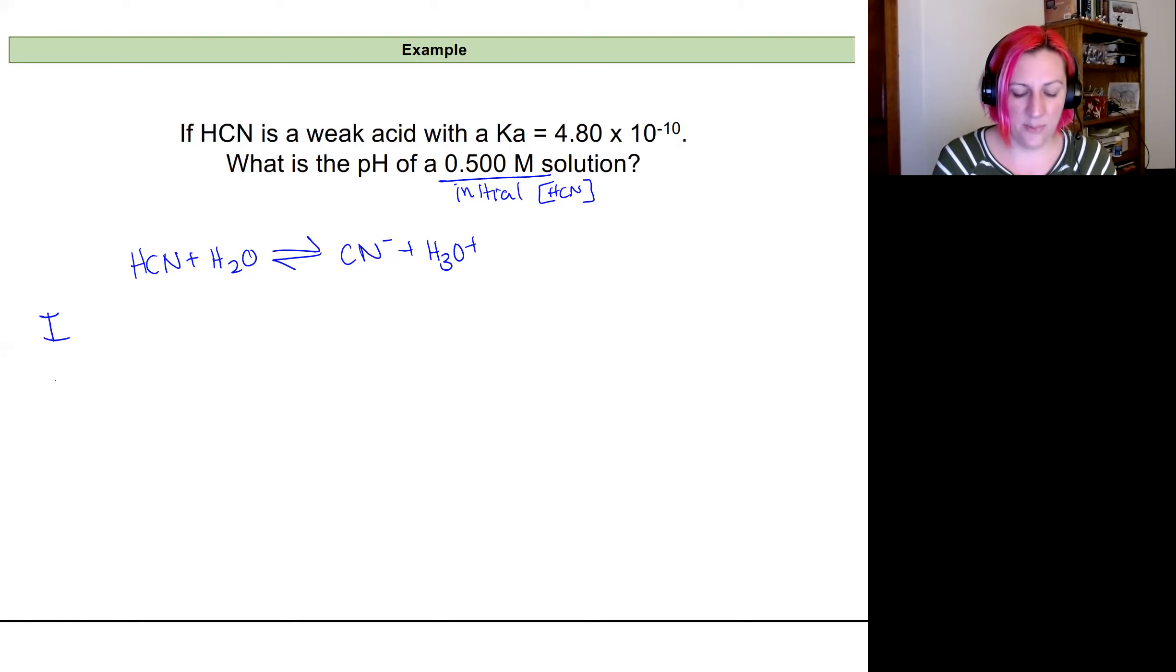So I'm going to look at my ice table. I'll have initial change in equilibrium columns. I have 0.5 molar hydrocyanic acid. I'm going to ignore the water because this is a liquid and a heterogeneous within our aqueous solution. So I'm going to leave it out of my K expression. And I know I have none of my products because we're just going to start with the initial amount of the acid that was added to the water.